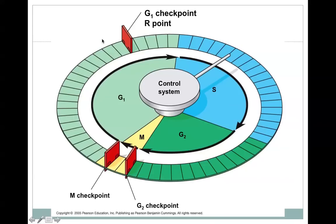But the major checkpoint is this one, this late G1 checkpoint, often called the R point or restriction point. Once a cell gets through this R point, it's pretty much going to make it all the way around and successfully complete the cell cycle through S, G2, and M and go back into G1 as two new daughter cells. So this G1 checkpoint is the major checkpoint of the cell cycle.